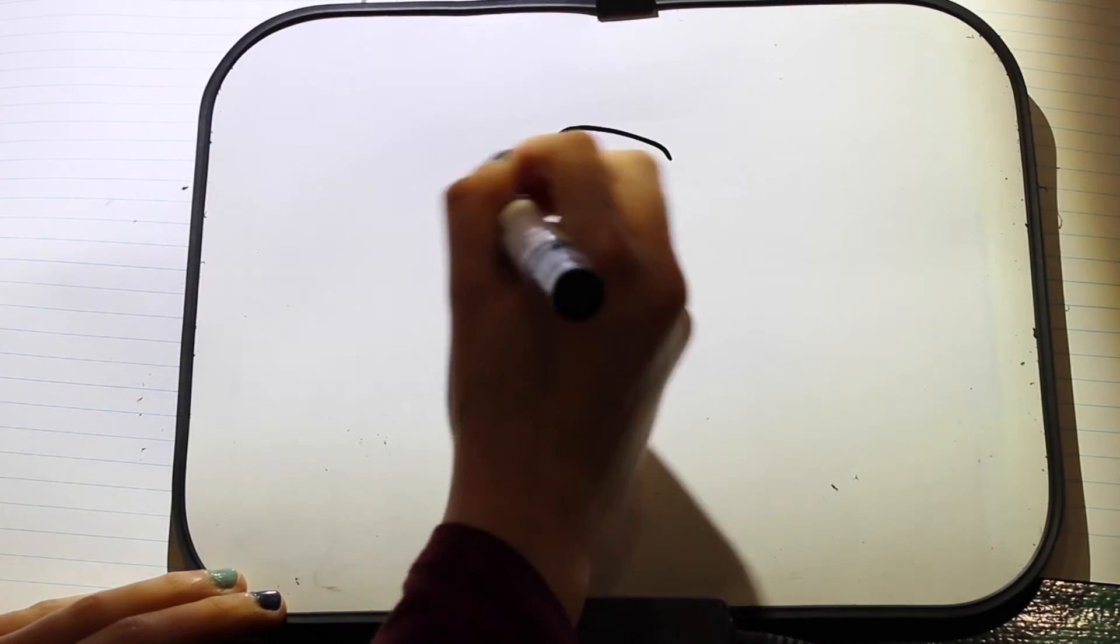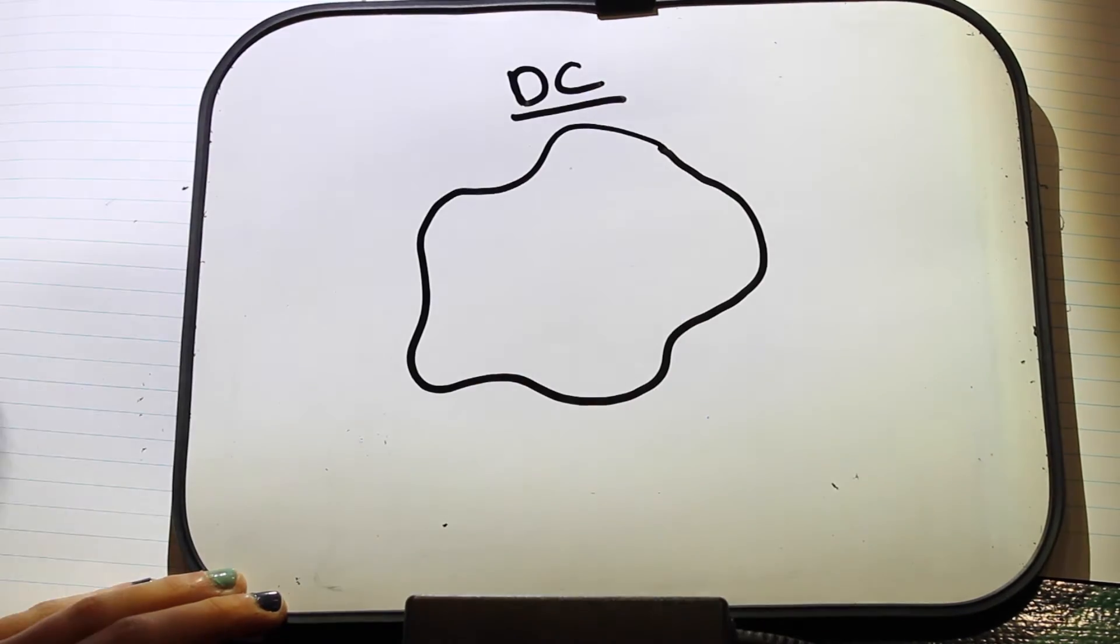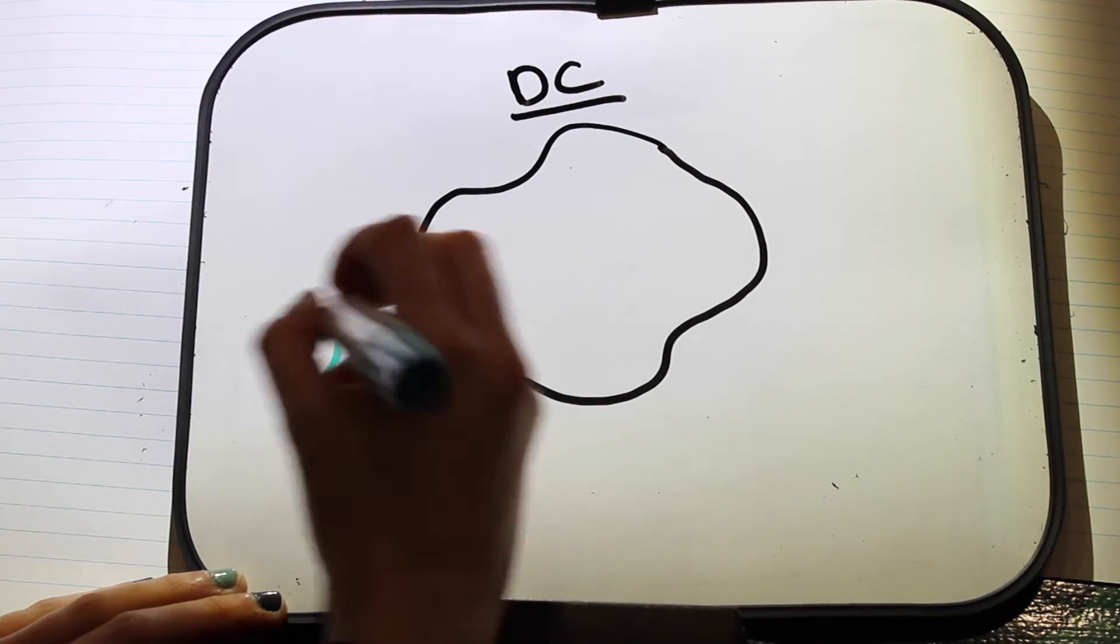Dendritic cells are a form of antigen-presenting cells in the lymph node, along with macrophages and B-cells.